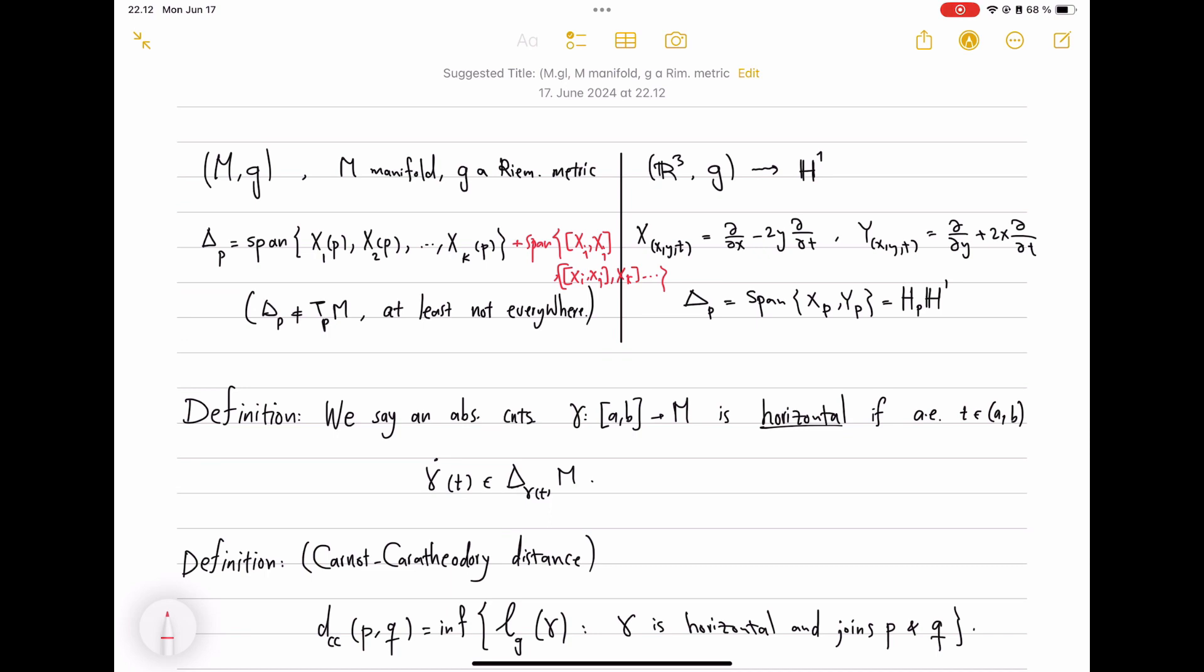So if it happens that adding the brackets to the span finally produces TPM, then we call this bracket generating.